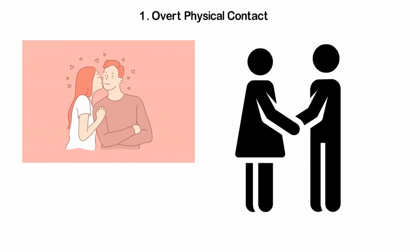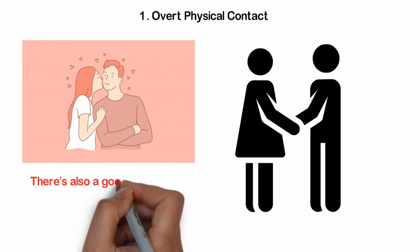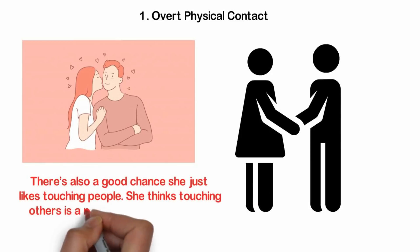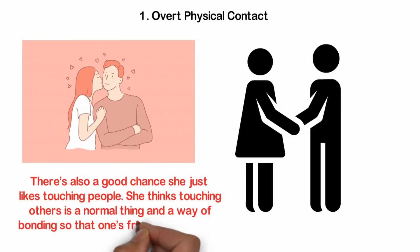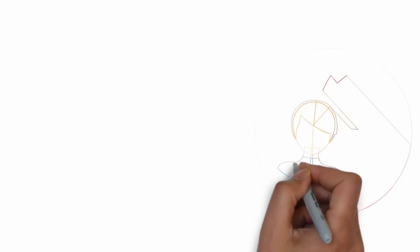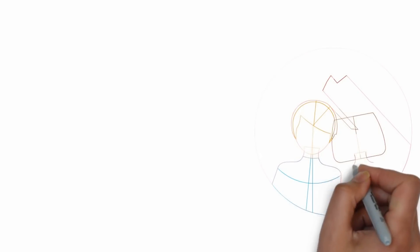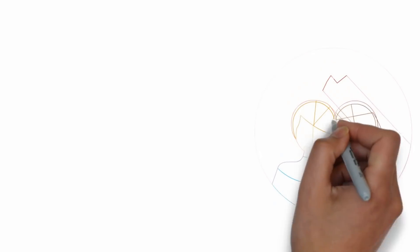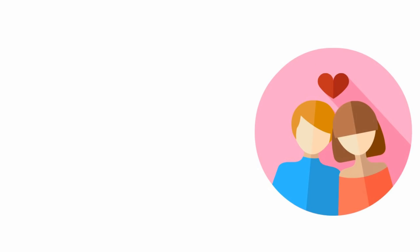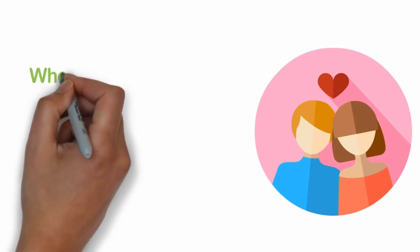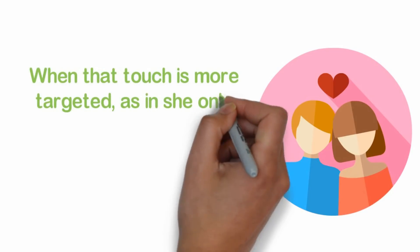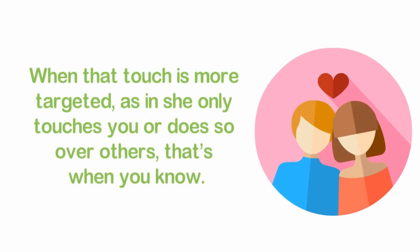Every time she wants to emphasize any of her emotions, she uses touch to get the point across. There's also a good chance she just likes touching people. She thinks touching others is a normal thing and a way of bonding so that one's friendship deepens. It's only when all the other signs mix with the touch sign that you can be certain. She seems to have this thing for touching you over other people. She initiates contact more often. Touch itself can never be the absolute sign of romantic interest. When that touch is more targeted, as in she only knows you or does so to you over others, that's when you know.